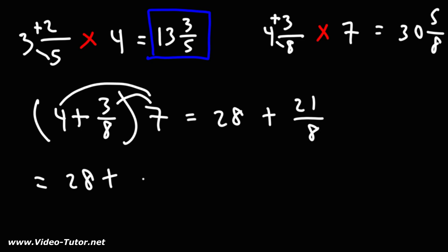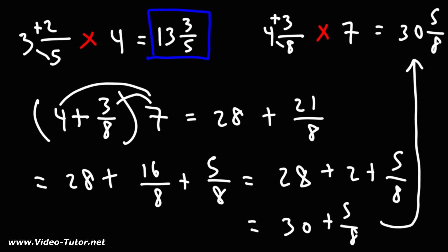Now 21 over 8, the highest multiple of 8 under 21 is 16. So I'm going to write this as 16 over 8. And 21 minus 16 is 5, so we can write that as 16 over 8 plus 5 over 8. Now 16 divided by 8 is 2. 28 plus 2 is 30. So we get 30 plus 5 eighths, which will be this answer, 30 and 5 eighths.